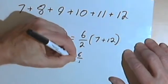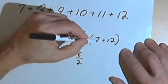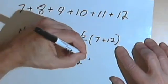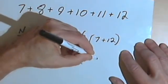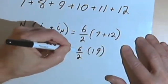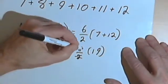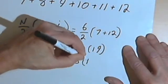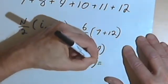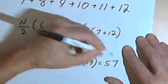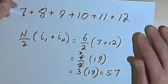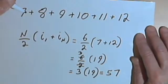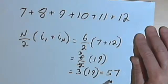Well, 6 halves times 7 plus 12, 7 plus 12 is 19. And 6 halves, of course, is just 3. So I've got 3 times 19, and 3 times 19 is 57. And if you add up these 6 terms, 7, 8, 9, 10, 11, and 12, you'll find that in fact they do add up to 57.